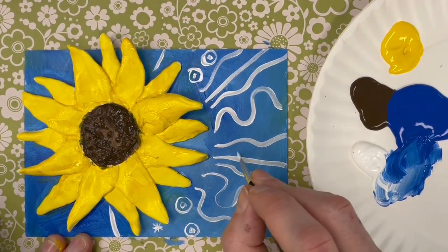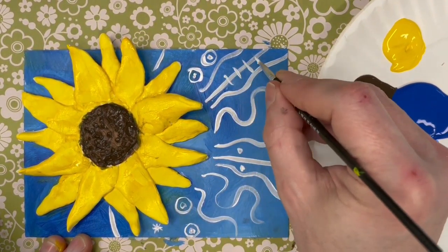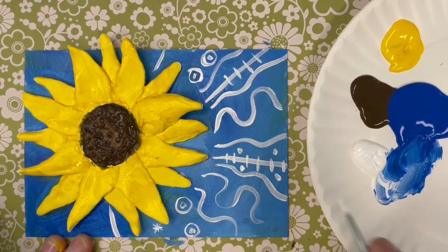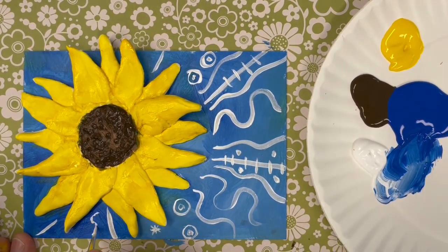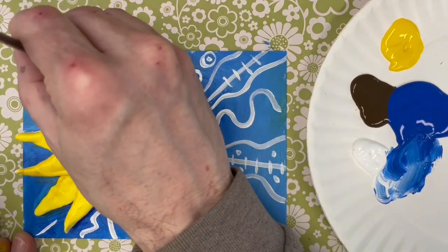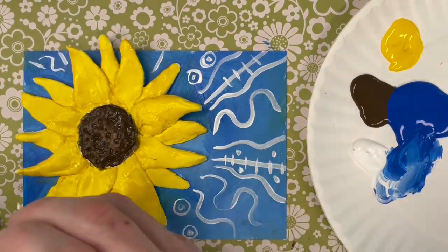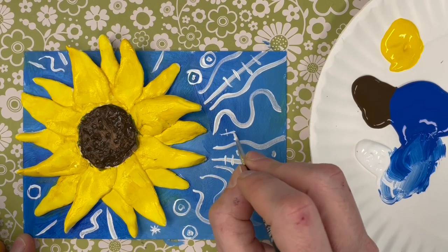There's some wavy lines, and the cool thing about Model Magic is you can paint it right after you build it and it will dry on its own in a very short amount of time. So I'm just putting on some finishing touches here.